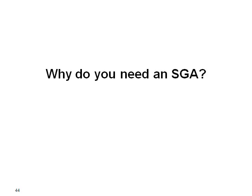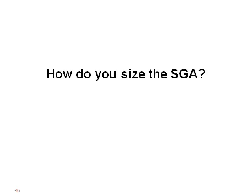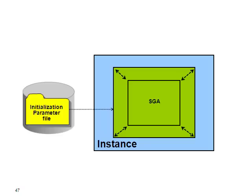So why would you need an SGA? Essentially for two reasons: to scale and share data. How do you size the SGA? You use a well-known file called an initialization parameter file, whose location is well known on your server. That parameter file contains a list of parameters that are here to size the various components of your SGA.